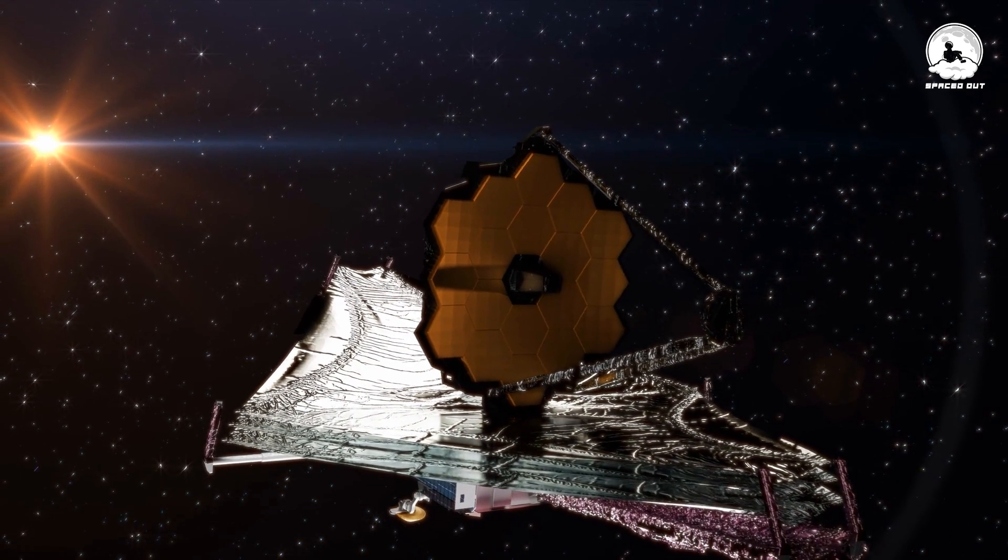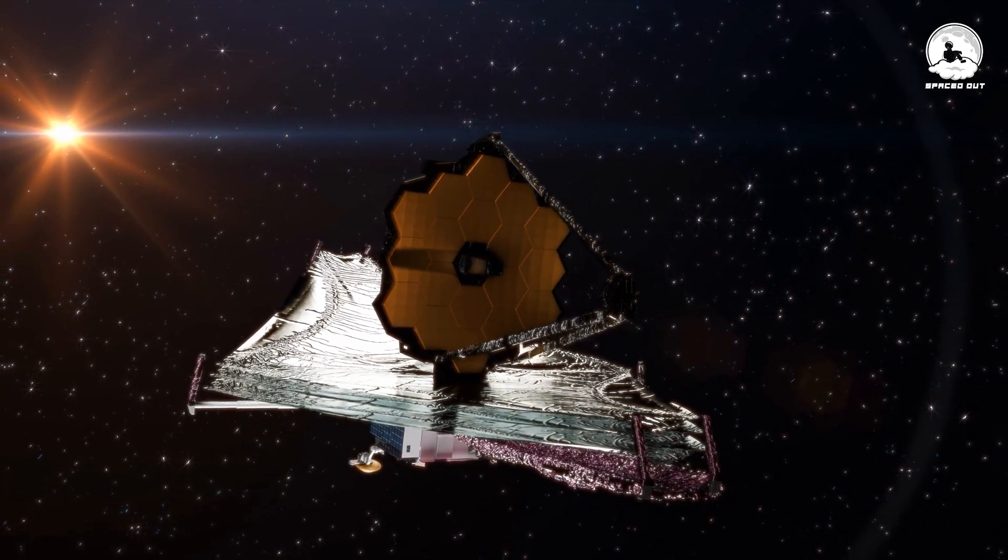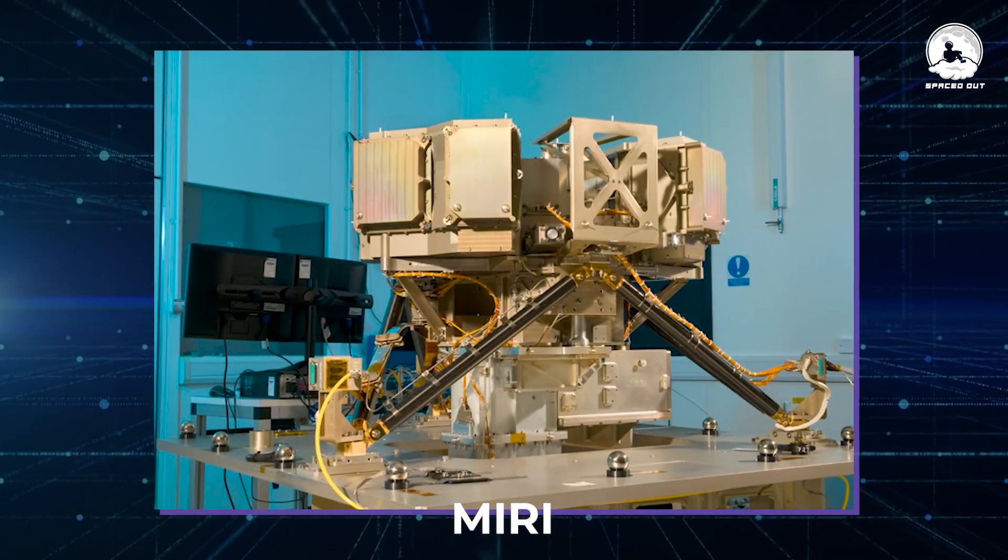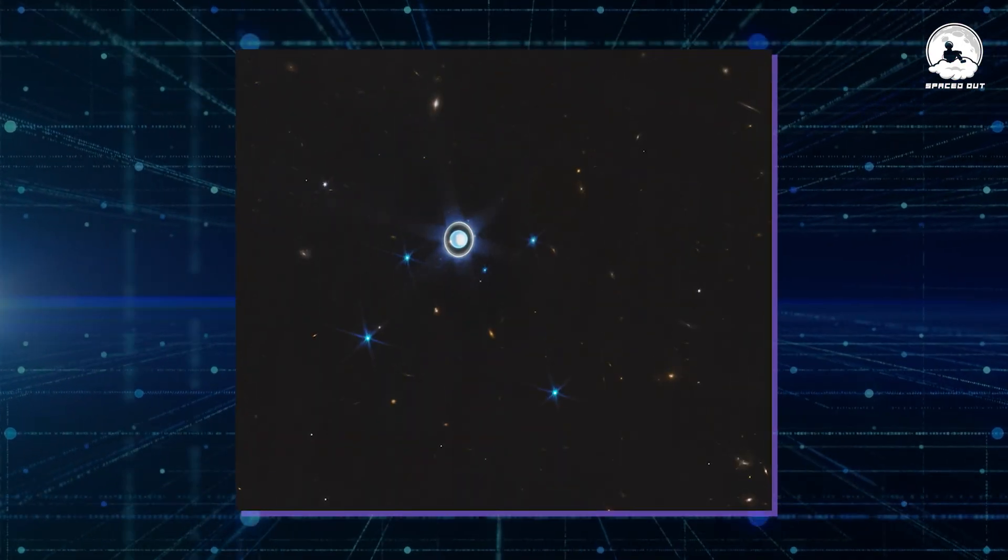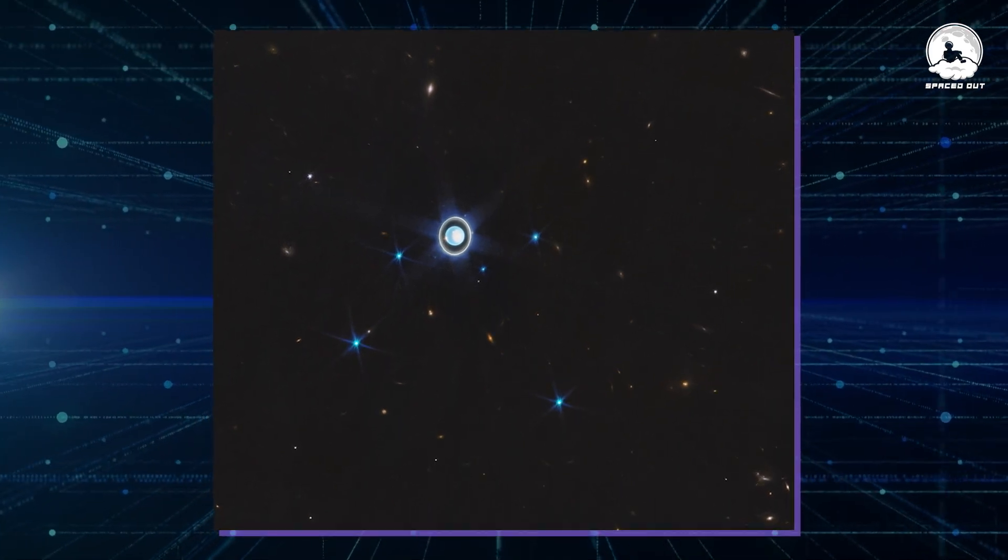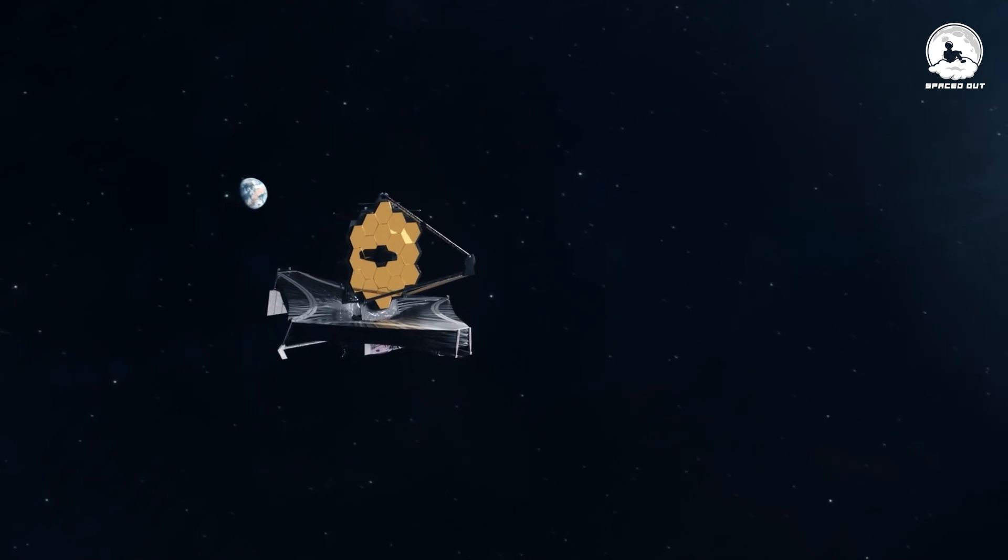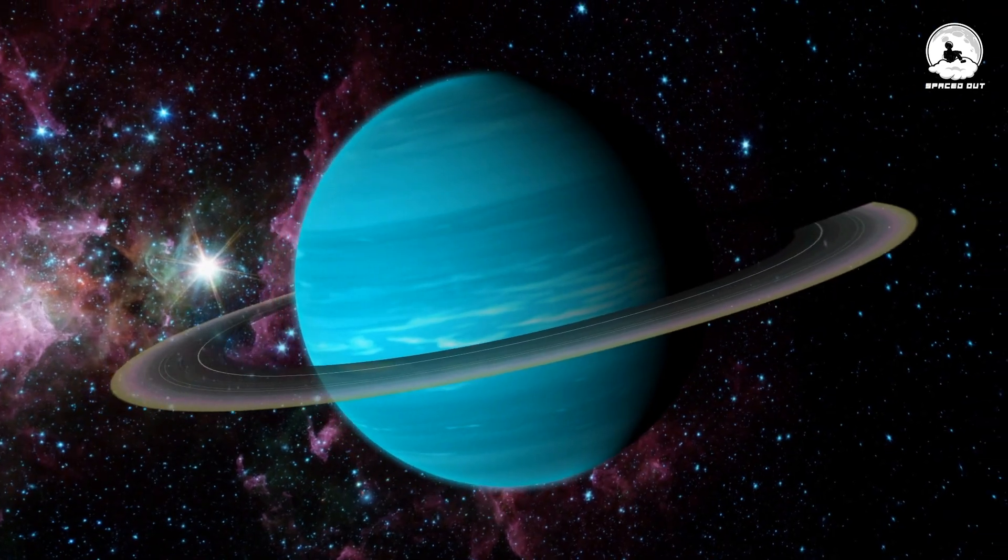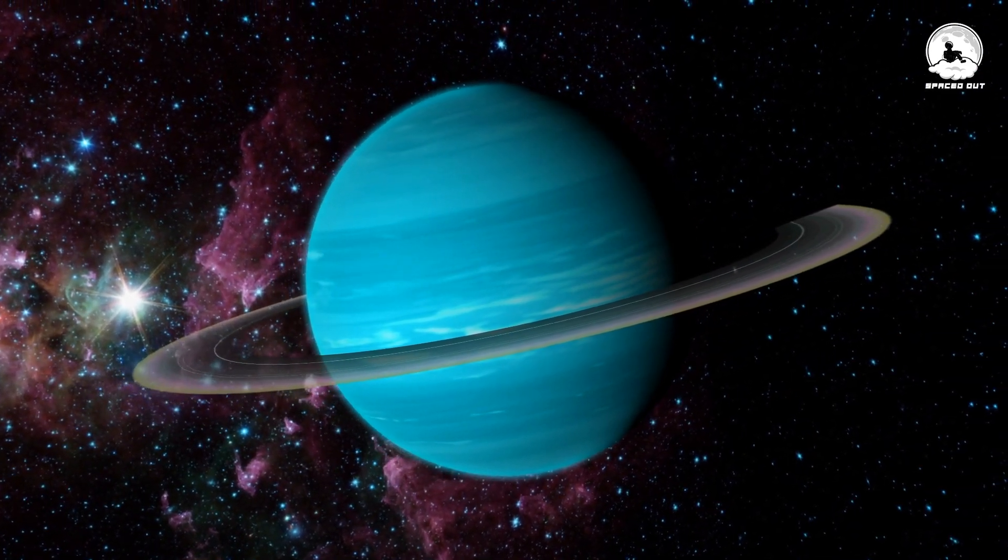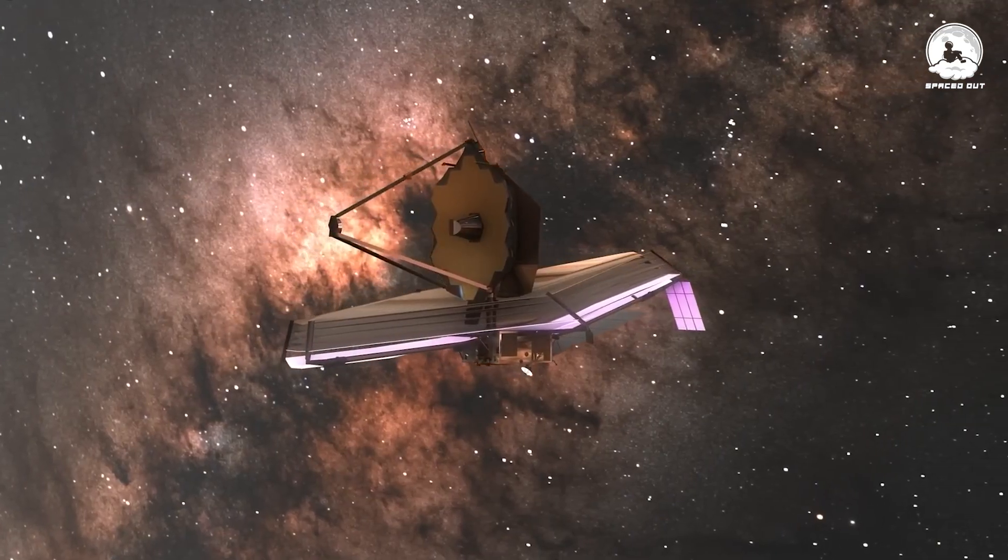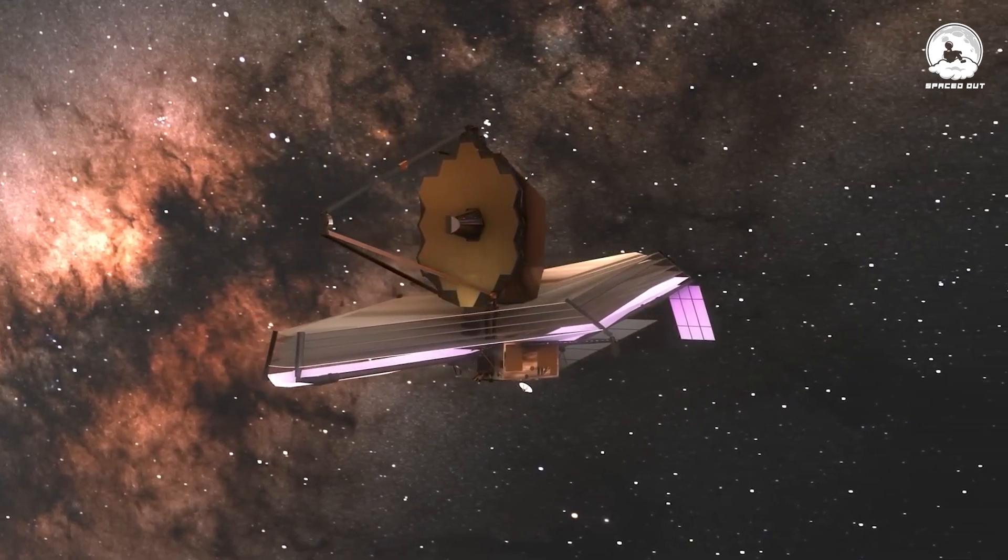The James Webb Space Telescope recently used its advanced cameras, NIRCam and MIRI, to capture a fresh image of Uranus. Think of Webb as a sophisticated space camera equipped with these special tools, allowing it to cut through the cosmic clutter around the planet and unveil hidden details. However, snapping this picture was no easy task for Webb.